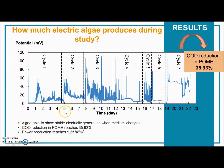Since I grew the algae in wastewater, from my analysis a COD reduction was achieved in POME. COD is an indicator of the level of harm of that wastewater. While producing electricity, algae could actually reduce the COD at the same time, and it was able to reduce it by up to 35.93 percent, which is a really significant number. Lastly, power production reached 1.25 watts per cubic meter — meaning for one cubic meter of wastewater, 1.25 watts of electricity can be produced.